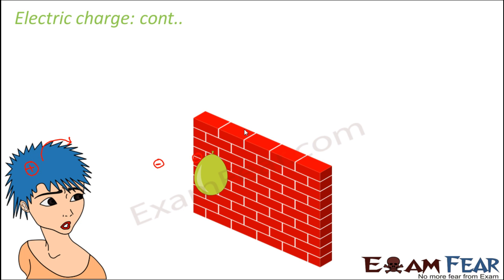Why does the balloon stick? Because the wall is not negatively charged — the balloon is negatively charged, but the wall as a whole is neutral, it carries no charge. But when the balloon is brought near the wall, there is attraction between them. From this observation, we can say that a charged object always tends to attract an uncharged object. We will see why this happens a little later.